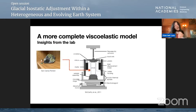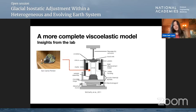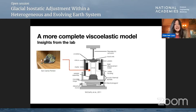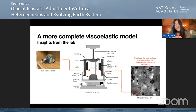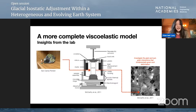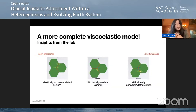Rock physicists take natural samples and put them inside high-pressure, high-temperature apparatus to emulate mantle conditions. Some experimentalists use synthetic rock-like materials. You apply stresses at different timescales and see how the sample responds. What rock physicists want to do is investigate the grain and sub-grain interactions that fundamentally control macroscopic deformation. With this knowledge, you can build a mechanistic model at the grain scale of what drives and dictates deformation.